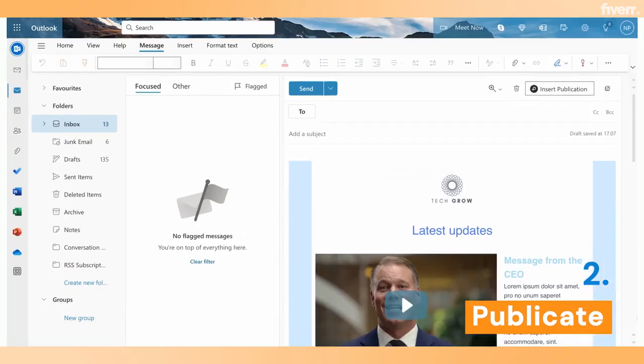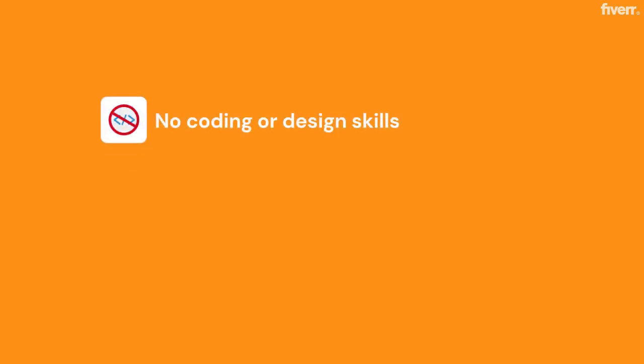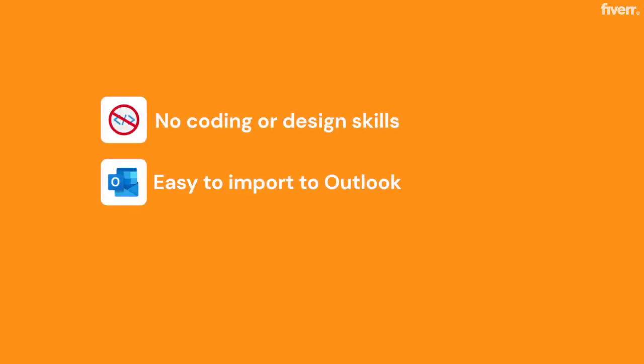With Publicate, it's much easier to create email templates and email campaigns — what you'd call an HTML email — because you just use drag and drop. No coding or design skills needed. It's super easy to import into Outlook whether you use the desktop app or Outlook on the web. Just one click on the Insert Publication button and you're set. This also means you can easily collaborate with colleagues or clients — anyone can send for you if you're on holidays, for example.